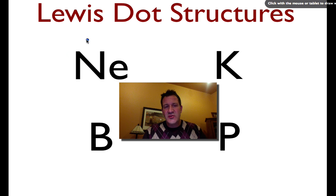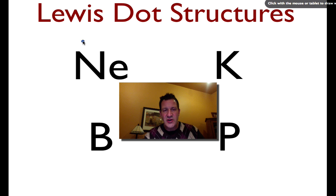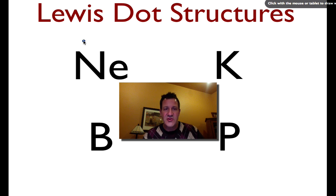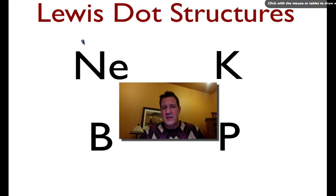The Lewis dot structure just shows the number of valence shell electrons on each element or in each atom. I kind of think of it as an abbreviated Bohr model. In the Bohr model we have all the shells and all the electrons in each shell, but in the Lewis structure we're really worried about the chemical bonding and the ratios for the chemical bonds. Therefore, we're only going to show the valence shell electrons because those are the electrons that are involved in the chemical bonding.